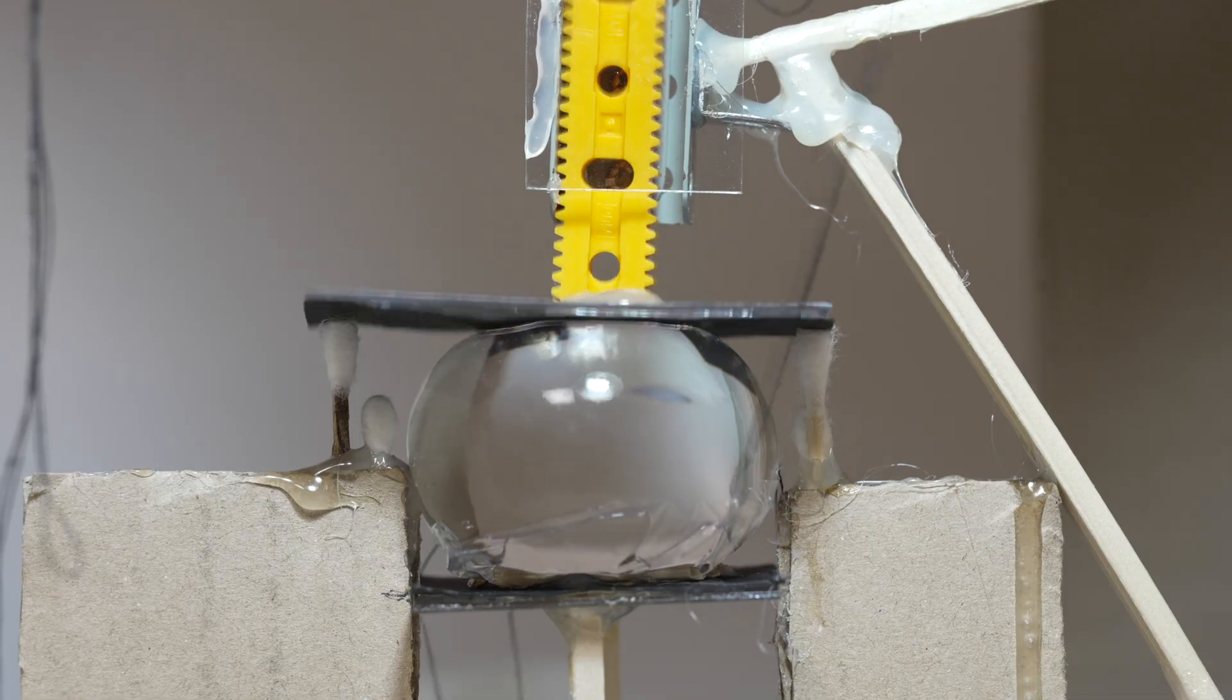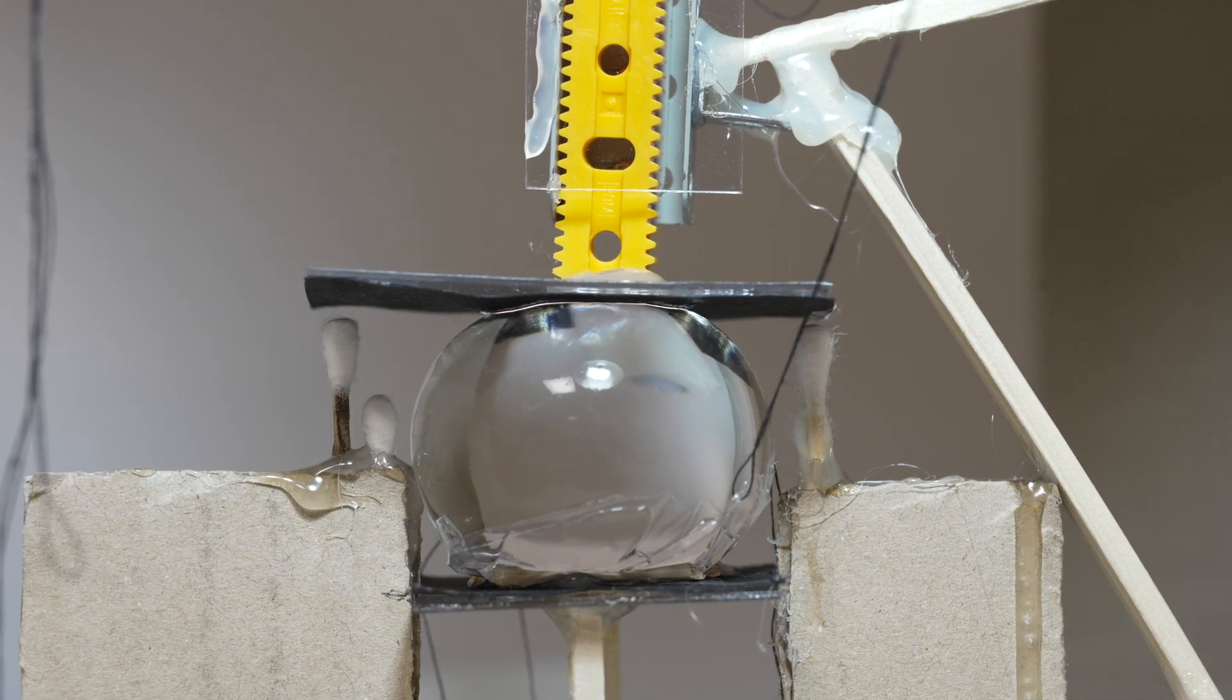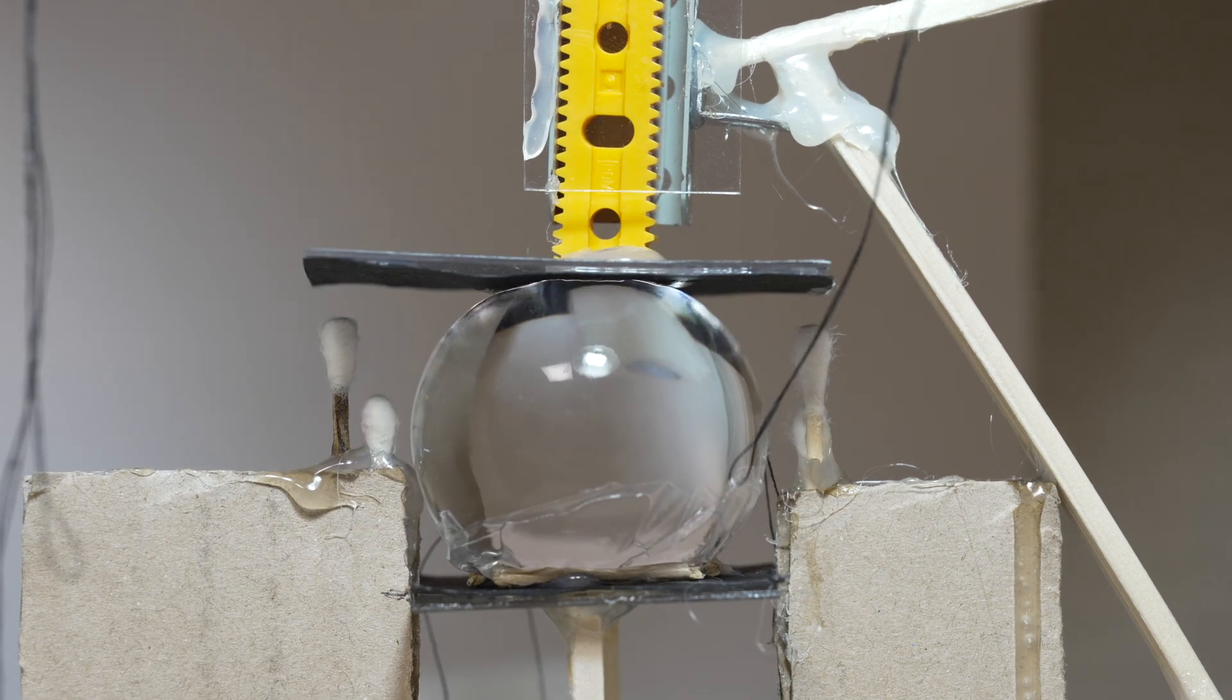Below the lens is a structure that keeps the lens in place when the lens is getting pressed. This structure prevents the lens from getting pressed too much, and the lens from falling off the entire platform using pieces of wood.